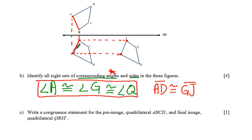And so side GJ maps to side QT. And once again, the translation preserves distances also, so all three of these segments are congruent.